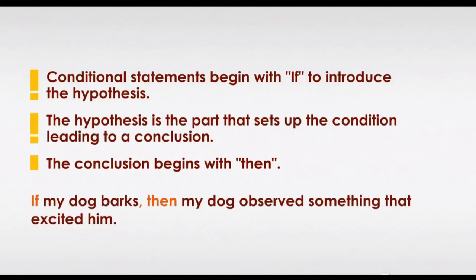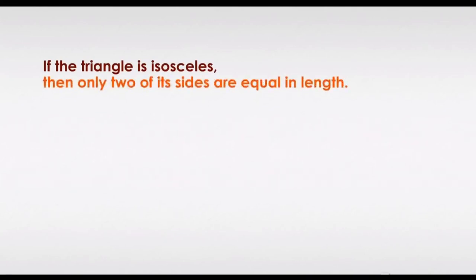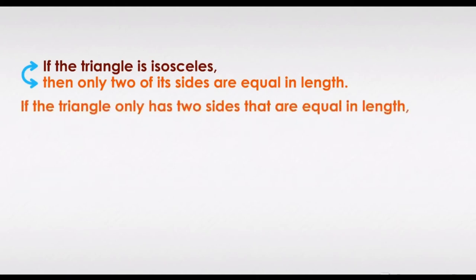You will see conditional statements in geometry all the time. You can set up your own conditional statements too. Here is one for an isosceles triangle: if the triangle is isosceles, then only two of its sides are equal in length. You can switch the hypothesis and conclusion of a conditional statement — take the conclusion and make it the beginning, and the hypothesis the end. If the triangle only has two sides that are equal in length, then it is an isosceles triangle.